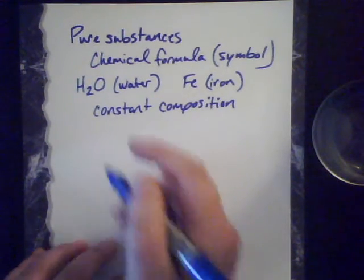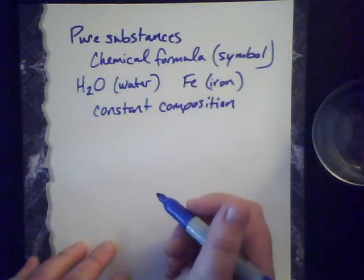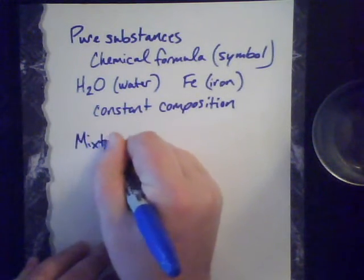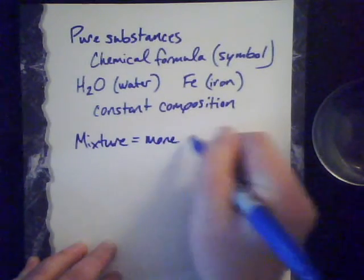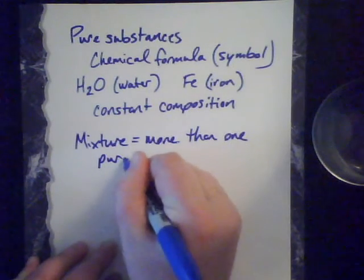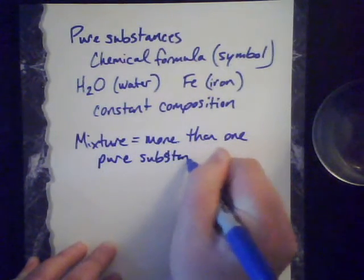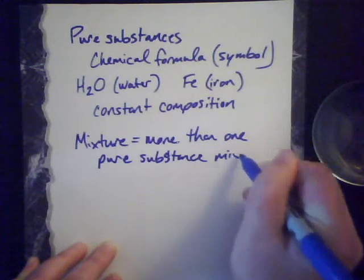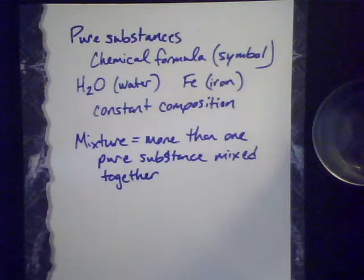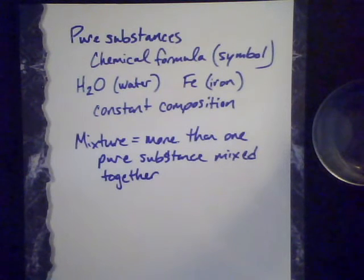If we have one or more of these pure substances together, then that's when we have a mixture — more than one pure substance mixed together. It could be more than two; we usually think about a mixture as just being two things, but we could have more than two, and that would be fine also.